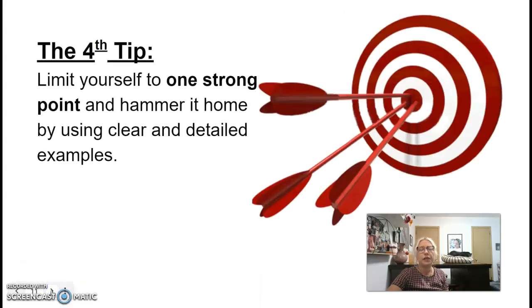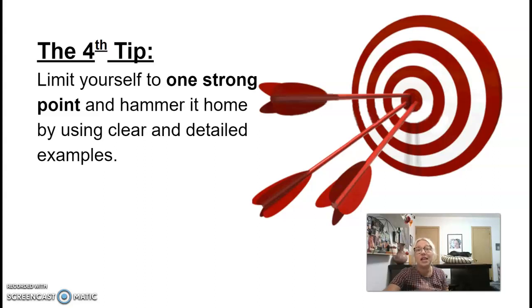The fourth tip: limit yourself to one strong point and hammer it home by using clear and detailed examples. Your job is to find what is this one strong point you want to make and how can you tell a story in order to show that about you. You don't want to list ten different things about yourself — stay focused on one. Finding that one point worth writing about is going to take some time.